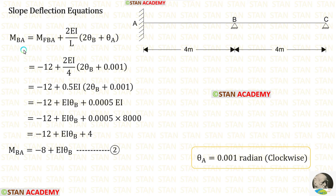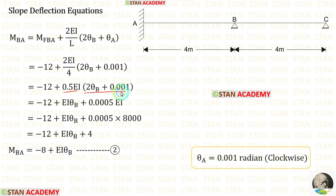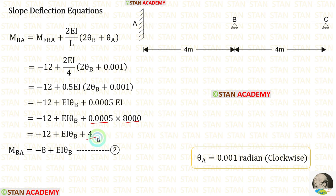Now let us make the slope deflection equation for M_BA. Applying the fixed end moment, with L = 4 and θ_A = 0.001, we multiply the terms and substitute EI = 8000, giving a factor of 4. So −12 + 4 = −8. This is equation number 2.